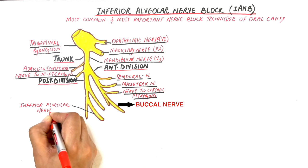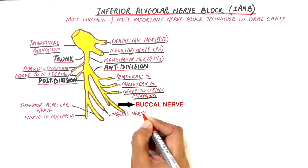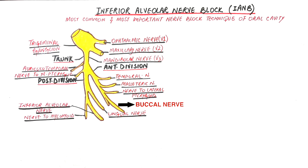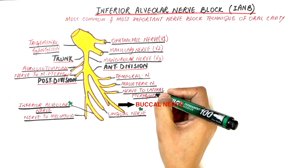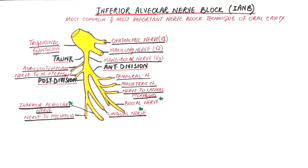Branches of the posterior division are the inferior alveolar nerve, the nerve to the mylohyoid muscle, and the lingual nerve. The nerve which plays the main role in the innervation of the lower teeth is the inferior alveolar nerve. Other important nerves associated with soft and hard tissue innervation of the lower jaw are the lingual nerve, which innervates half of the tongue up to the midline, and the buccal nerve, which innervates the buccal soft tissues of molars and is a branch of the anterior division of the mandibular nerve.